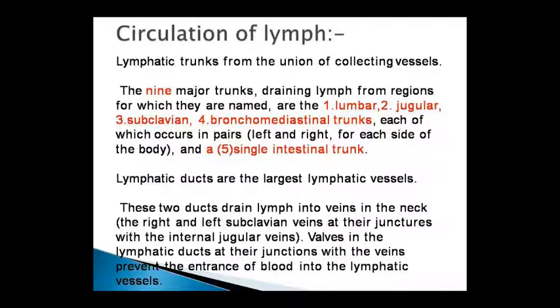The above four trunks are all pairs because the body has a left part and a right part. But the intestinal trunk is single — it is written as one single intestinal trunk. Regarding lymphatic ducts, the largest lymphatic vessels are the lymphatic ducts, and there are two such ducts.